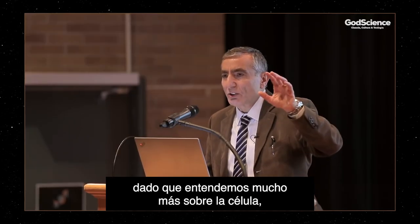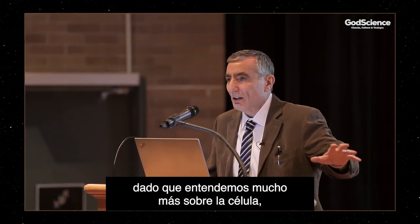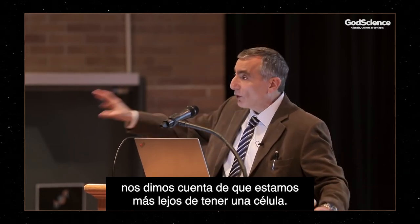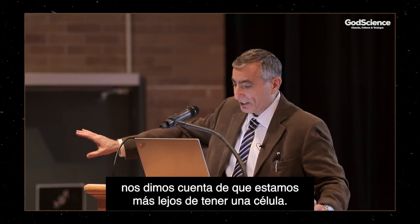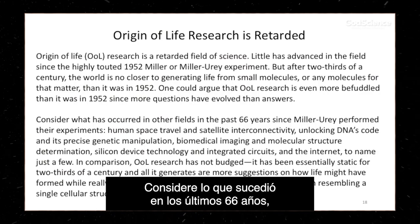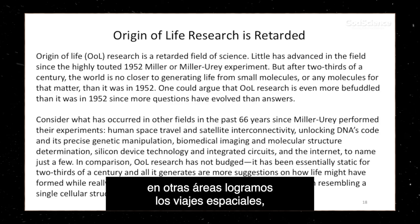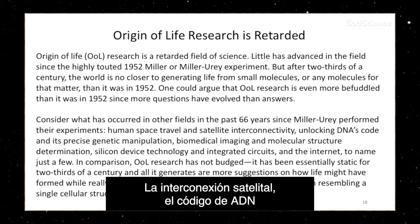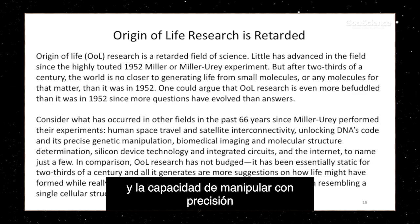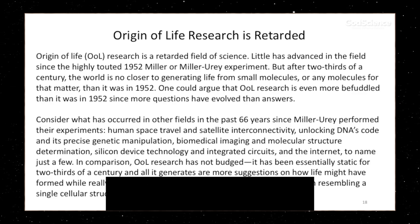Since we understand much more about the cell, it's made us realize that we're further from having a cell. Consider what's happened in the last 66 years — two-thirds of a century — since the Miller-Urey experiment in other fields: we have human space travel, satellite interconnectivity, DNA's code, and the ability to precisely manipulate the DNA sequence.